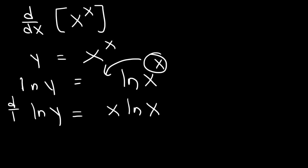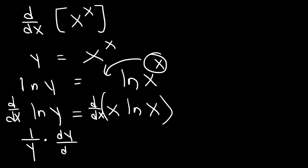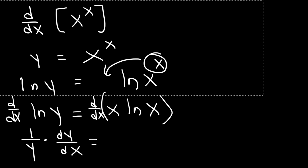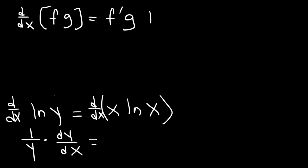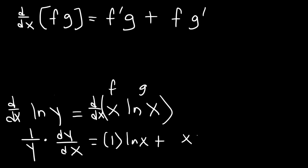At this point we can take the derivative of both sides with respect to x. The derivative of ln y is 1 over y times dy/dx. On the right side we need to use the product rule: the derivative of f times g is f prime times g plus f times g prime. So here f is x and g is ln x. The derivative of x is 1 times ln x, plus x times the derivative of ln x, which is 1 over x.